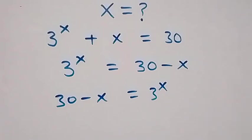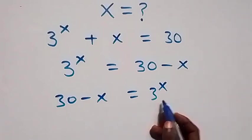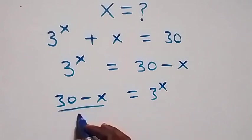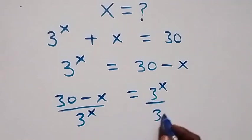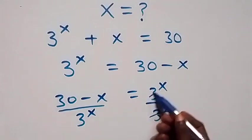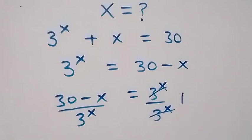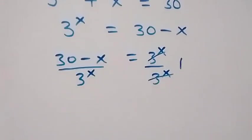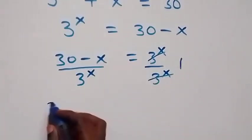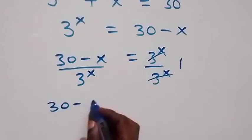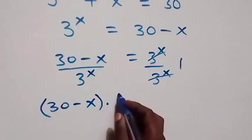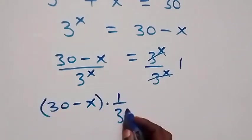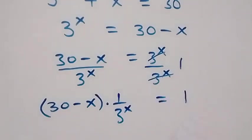Let's divide both sides by 3 raised to power x. Dividing by 3 raised to power x on both sides, this cancels out and becomes one. Then we can separate this as 30 minus x multiplied by 1 over 3 raised to power x, now equals to 1.